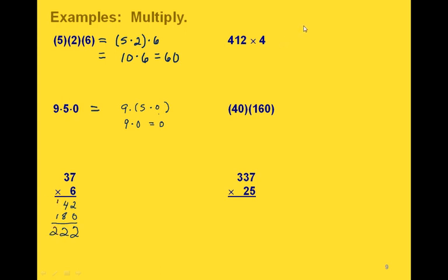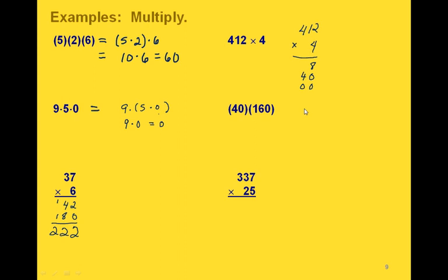In this one we're taking 412 times 4. We're thinking of the distributive property: we multiply the 4 times the 2, the 4 times the 10, and the 4 times 400, and add all those together. First, 2 times 4 is 8. Then when we use the 1, we're actually multiplying 10 times 4, so we put a 0 here to keep track of place value, and 1 times 4 is 4, giving us 40. When we multiply the 4 times the 4, we're actually multiplying 400 times 4, so we put two zeros to get to the hundreds place, and 4 times 4 is 16, giving us 1,600. Adding our columns, we end up with 648.